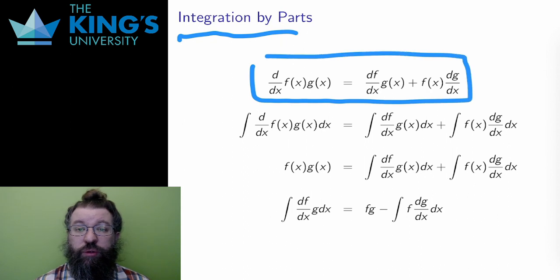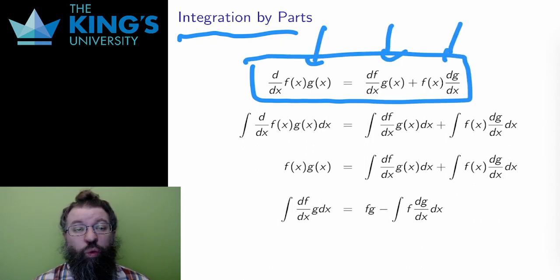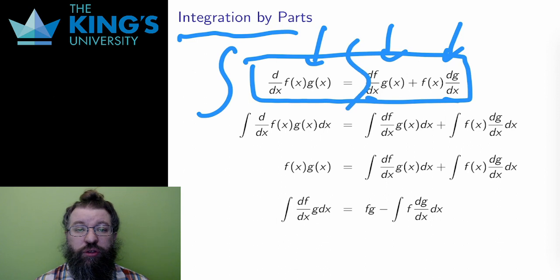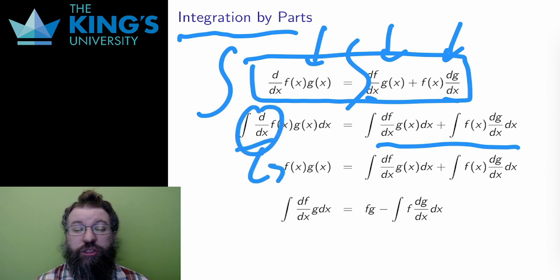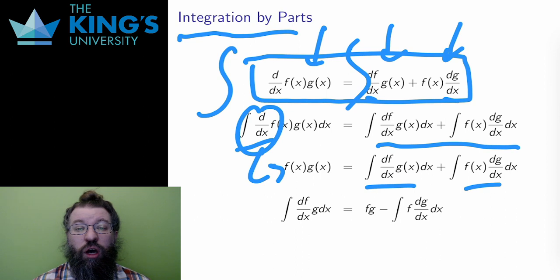The derivative of a product splits up into two terms, and each of those terms has one of the two derivatives. I can integrate both sides of this equation, and then the integral on the right splits up over addition into two integrals. The integral on the left is the integral of a derivative, so it cancels off, leaving the original product on the left. But on the right, no such cancellation is possible, since the integrals are all products of a derivative and some other function.